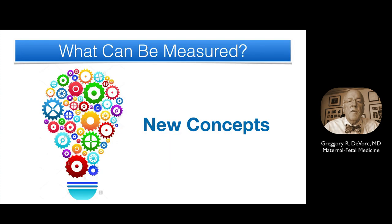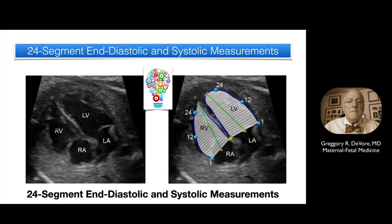This is a new concept: the 24-segment end-diastolic and end-systolic widths of the right and left ventricles. The graphic illustrates 24 segments, with Segment 1 at the base, Segment 12 in the midsection, and Segment 24 at the apex. In addition, the length of each chamber can be computed. These end-diastolic and end-systolic measurements form the basis for a number of derived measurements that will now be discussed.